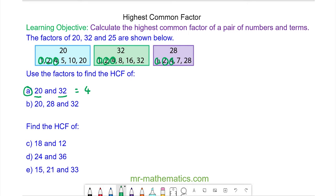And because neither 5, 10 or 20, 8, 16 or 32, 7 or 28 are common to the others, again 4 is the highest common factor.